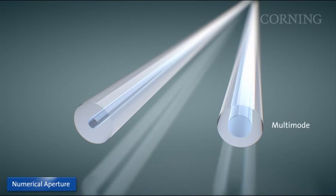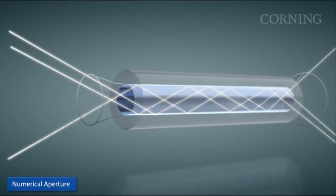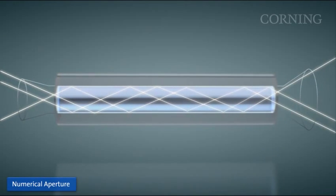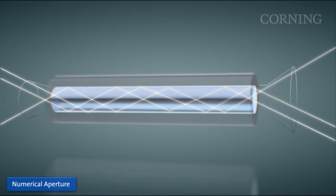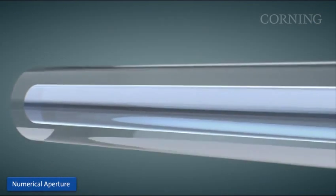Multi-mode fiber has two important characteristics, numerical aperture and core size. Numerical aperture is the measure of the angular range of acceptance of light into a fiber. The angle over which a fiber accepts light depends on the refractive indices of the core and cladding glass.